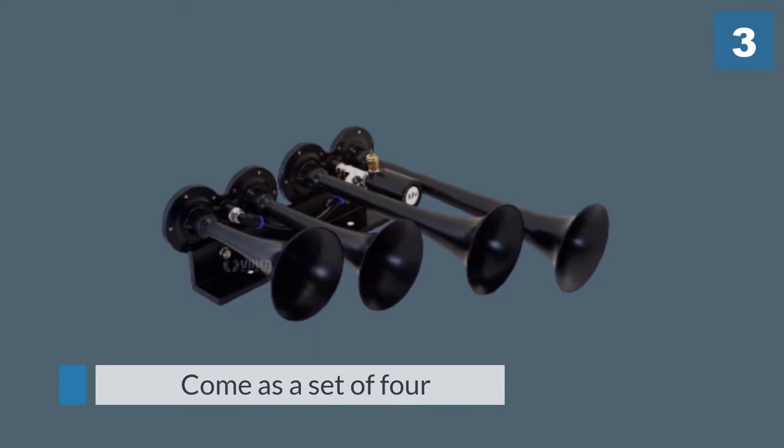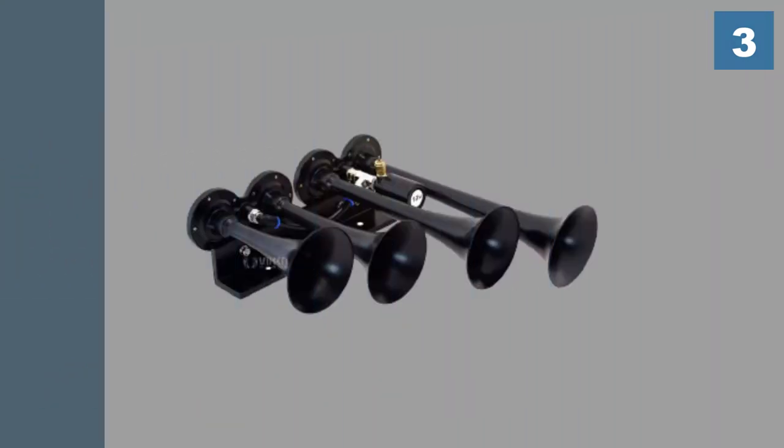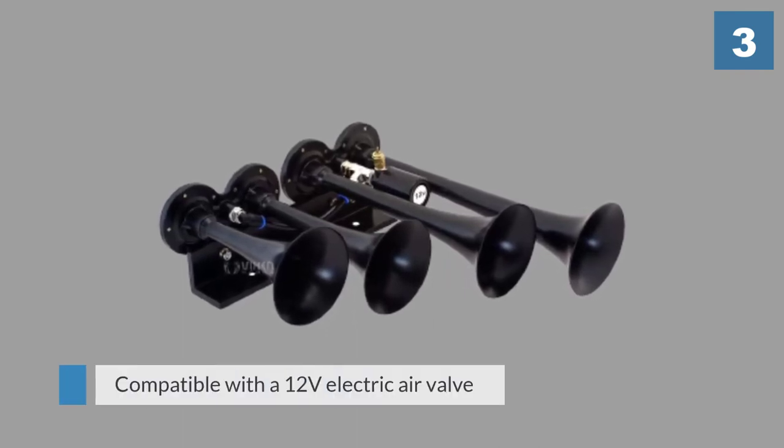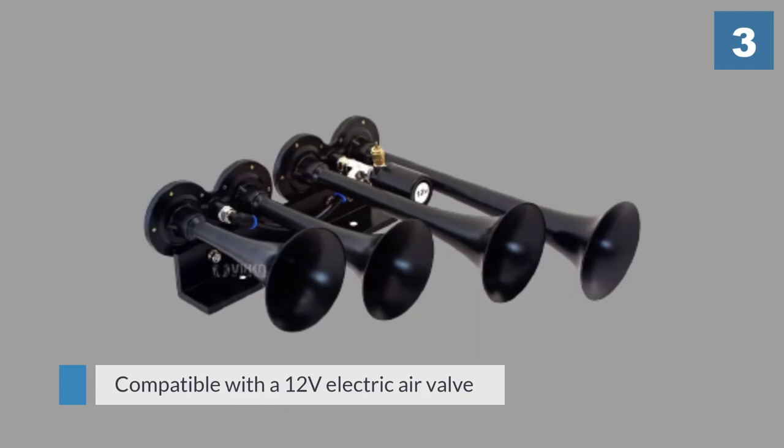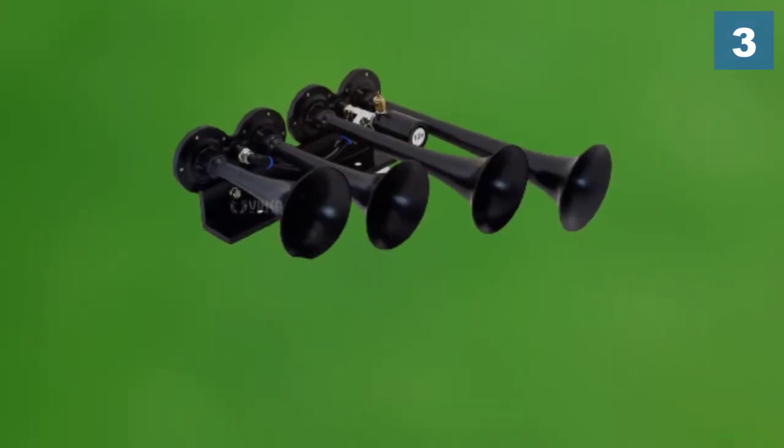These sleek black horns come as a set of four. They're compatible with a 12 volts electric air valve compression system. Just hook the included one quarter inch nylon plastic hose to your air compression system. The mounting hardware for the horns is also included in this kit.